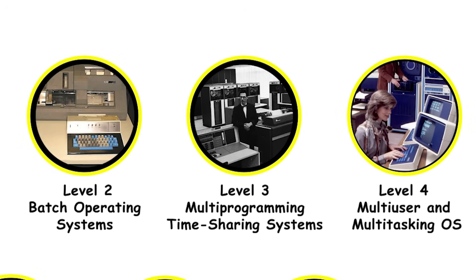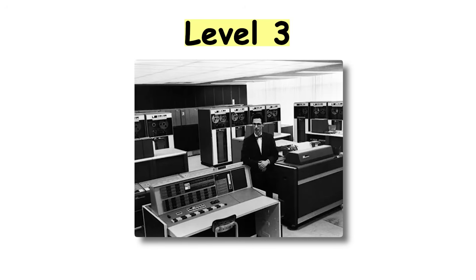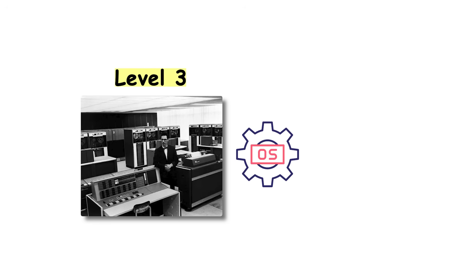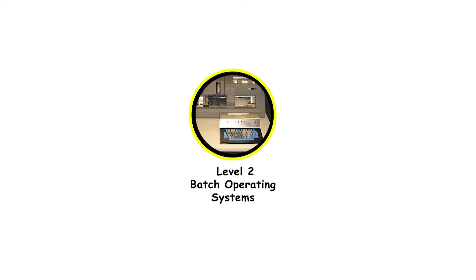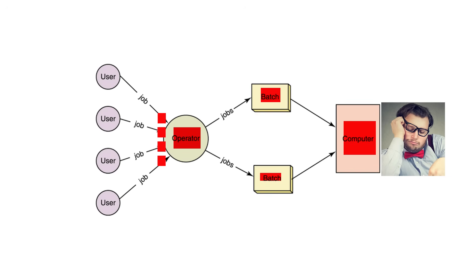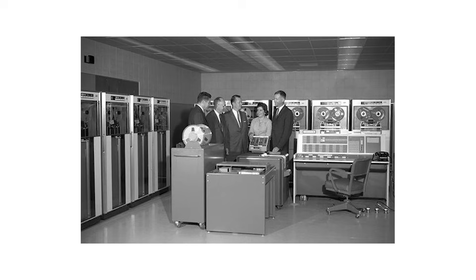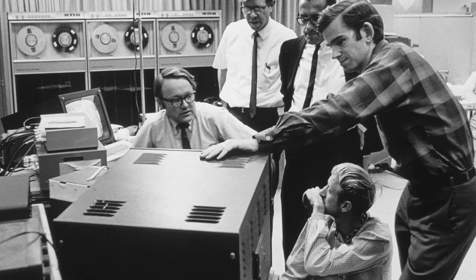Level 3: multiprogramming and time-sharing systems — the real revolution. This is where operating systems got serious. The problem with batch systems was simple: when one program was waiting for I/O, the CPU sat idle. Disk and tape operations are incredibly slow compared to CPU speeds, so engineers had a brilliant idea.